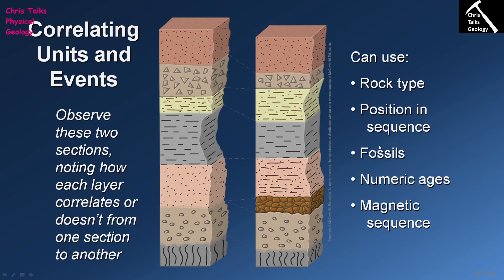Numeric ages are also helpful. For instance, if there is a lava flow — let's say this yellow layer represents a lava flow — and we date it at this location and find it's 200 million years ago, then we date the lava flow at a second location and also find 200 million years ago, we can say with a reasonable degree of certainty that we're looking at the same rock, and so we would correlate those units together.